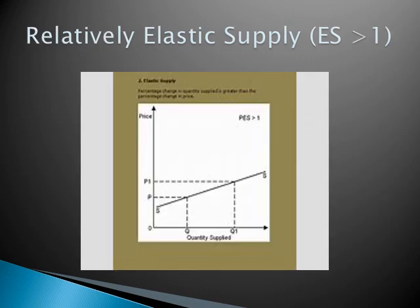Our next degree is relatively elastic supply, where elasticity of supply is greater than 1. In the diagram, there is a very broad space between the quantities and a very narrow space between the prices, meaning supply is more and price is less. The original price OP changes to OP1, but the change in quantity from OQ to OQ1 is very large. This is a situation when there is a small change in price but it brings a large change in the quantity supplied.